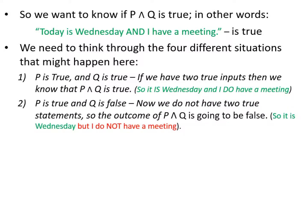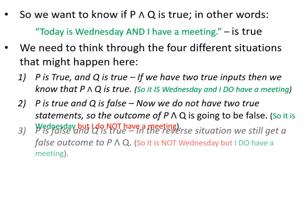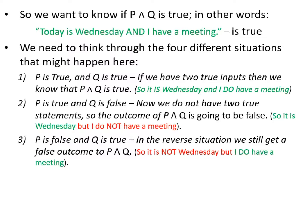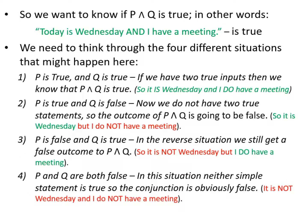When P is true and Q is false, it is Wednesday but I do not have a scout meeting, so P AND Q comes out as false — the line of logic does not support what I'm saying. The same thing happens if P is false and Q is true: I do have the meeting but it's not Wednesday, so P AND Q is still false. Finally, if both are false, I am completely wrong — I neither have a scout meeting nor is it Wednesday.